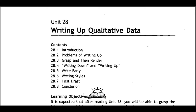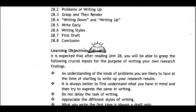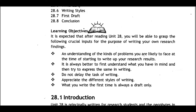Unit 28: Writing Up Qualitative Data. Contents include sections 28.1 Introduction, 28.2 Problems for Writing Up, 28.3 Grasp and Then Render, 28.4 Writing Down and Writing Up, 28.5 Write Early, 28.6 Writing Styles, 28.7 First Draft, and 28.8 Conclusion. Learning objectives: after reading unit 28, you will be able to grasp crucial inputs for writing your own research findings and understand the kinds of problems you are likely to face when starting to write up your research results.